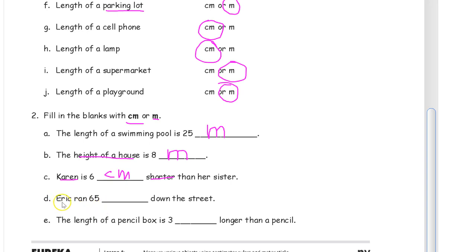And Eric, usually a boy's name, ran 65 something down the street. 65 centimeters is not very far to run. It's like two rulers or so. So you can't really run for 65 centimeters. This has to be meters. And the length of a pencil box, that's going to be centimeters. And especially the difference between a pencil box and a pencil is only going to be centimeters. It's going to be not that much bigger.